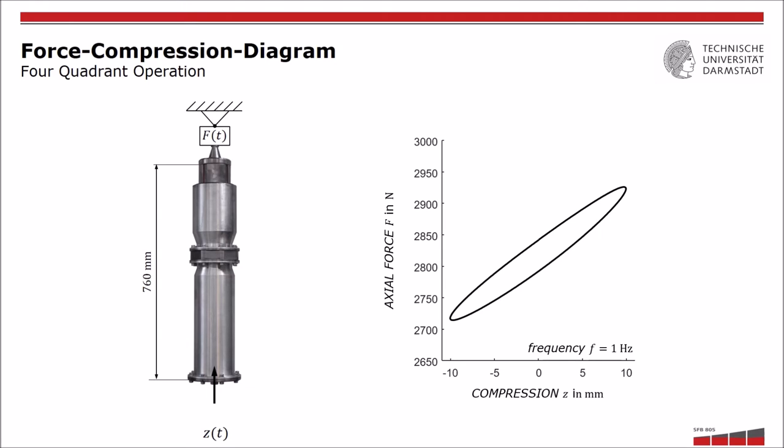By changing the rolling piston diameter, which changes the load carrying area, it is possible to keep the axial force almost constant. If the air spring pressure rises, the piston decreases the load carrying area and vice versa. It is even possible to produce a negative stiffness. This so-called four quadrant operation is characteristic for an active strut.